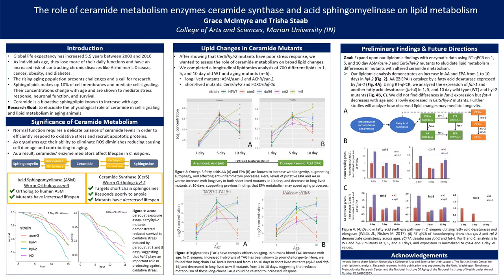We then wanted to expand upon our lipidomic findings with enzymatic data using RTQ-PCR on 1, 5, and 10-day-old ASM3 and Hyl-2 mutants, to elucidate lipid metabolism differences in mutants with altered ceramide metabolism. We showed that there was an increase in AA and EPA from 1 to 10-day-old Hyl-2 mutants, and AA to EPA conversion is catalyzed by the fatty acid desaturase gene FAT1. We used RTQ-PCR to analyze the expression of FAT1 and another fatty acid desaturase gene FAT4 in wild-type and Hyl-2 mutants. Although we didn't show any differences in FAT1 expression, we saw that FAT4 decreased with age and that there was a really low expression of FAT4 in the Hyl-2 mutants. We'll have to do further studies to analyze what these changes may mean.